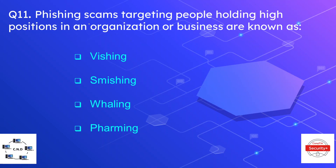Question number eleven: phishing scams targeting people holding high positions in an organization or business are known as — the options are vishing, smishing, whaling, and pharming. The correct answer is whaling. For example, if an attacker targets the CEO of an organization through phishing, that technique is called whaling because he is targeting a high-value target.